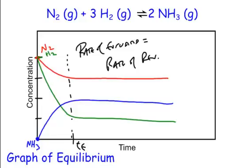Let's say I put in more N2 — the red line. The N2 is still going to come down by one mole, whereas the NH3 will continue to go up by two moles. Any time you put some in, you're going to have some shift happen in order to compensate for that change.